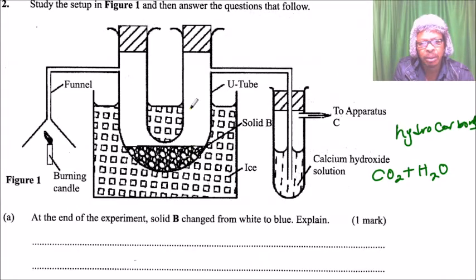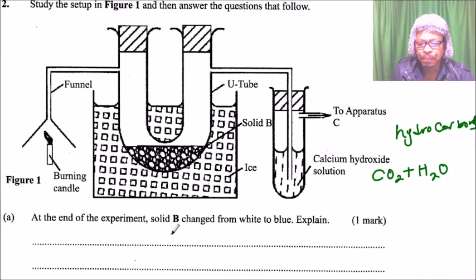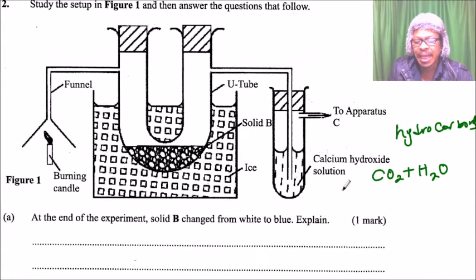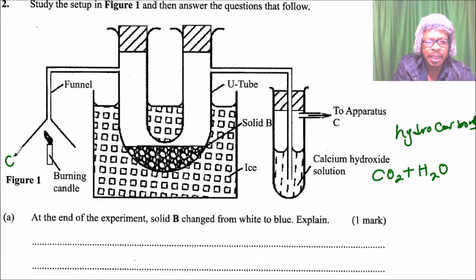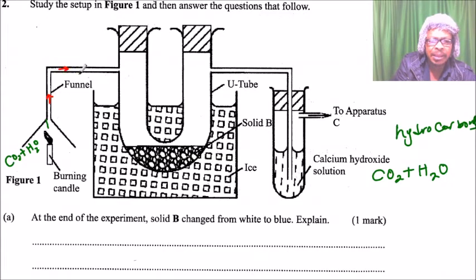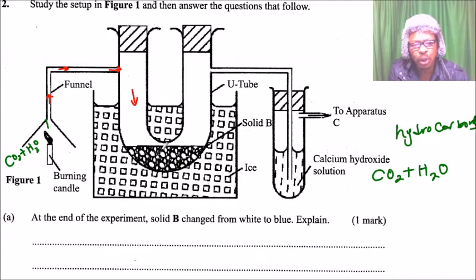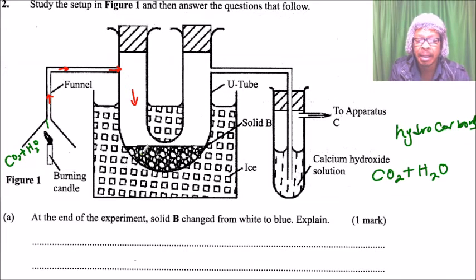We have solid B, which we don't know yet, but we can work that out. Looking at the question: at the end of the experiment, solid B changes from white to blue. Since carbon dioxide and water are produced here, they travel through the tube and come into contact with solid B.